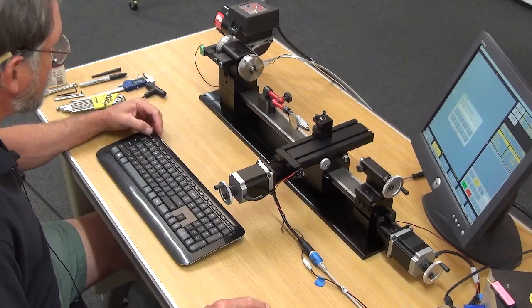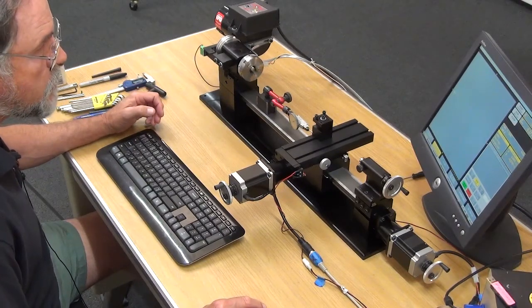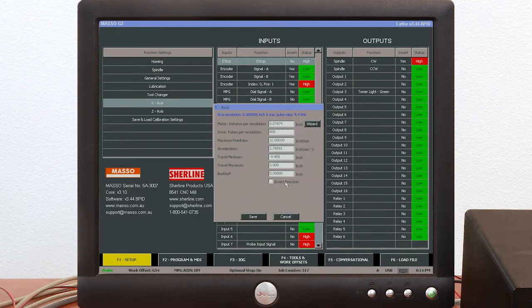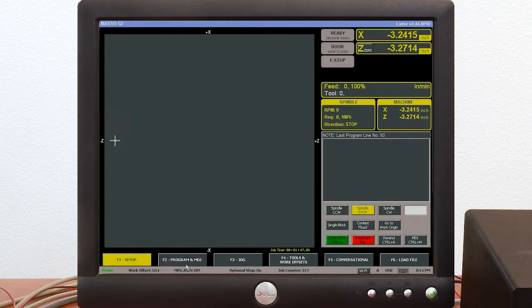So I'm going to go to my setup screen again F2. Go to the x-axis. All right and for my offset here I'm going to put in one thou. Save it. Go back to MDI.